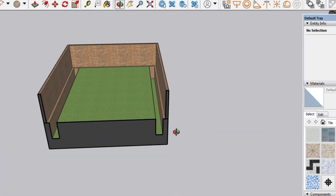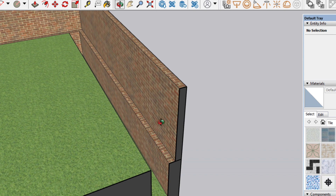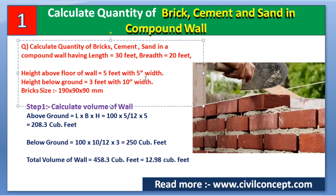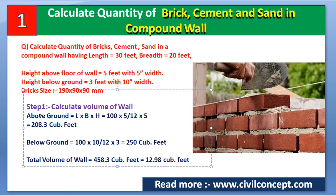So from this section view, the wall above the floor is 5 inches wide and the wall below the floor is 10 inches wide. The height above the floor is 5 feet and height below the ground is 3 feet with 10 inch width. The size of bricks taken is 190 by 90 by 90 mm — this is the standard brick size, though it may vary by location. For now I am taking the brick size as 190 by 90 by 90 mm.